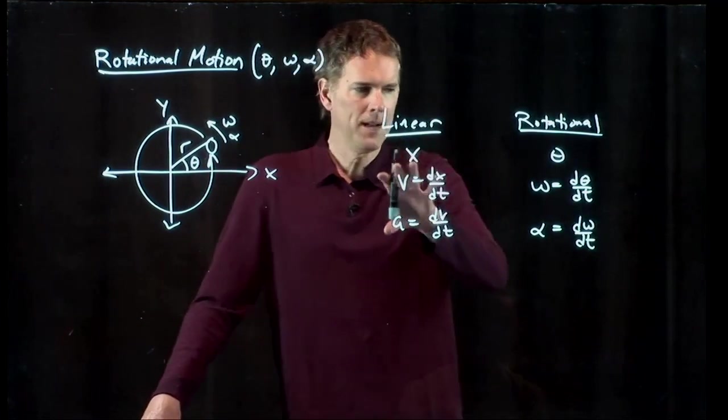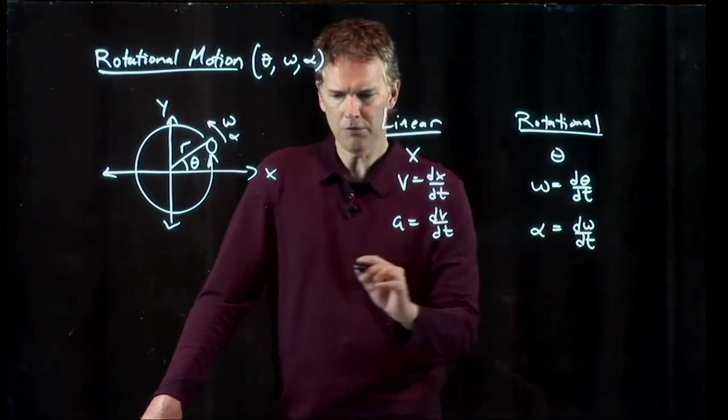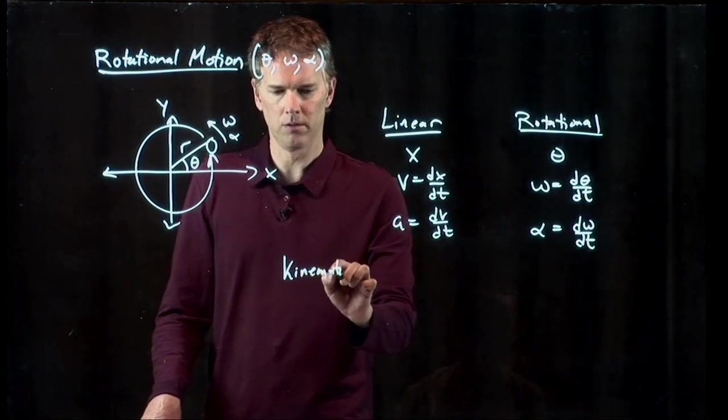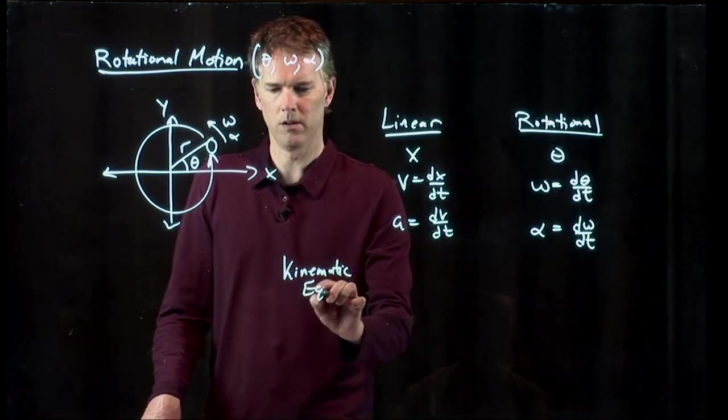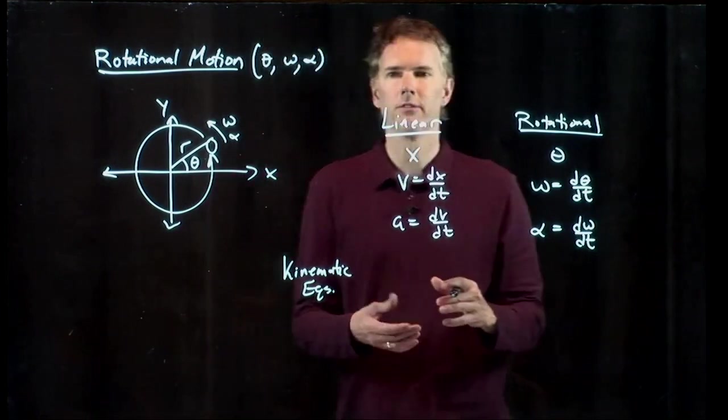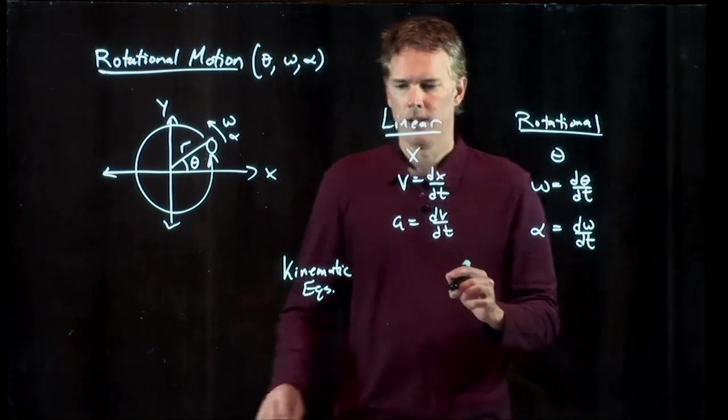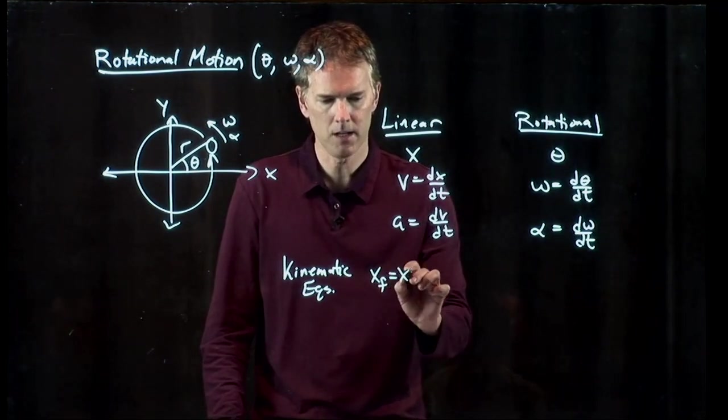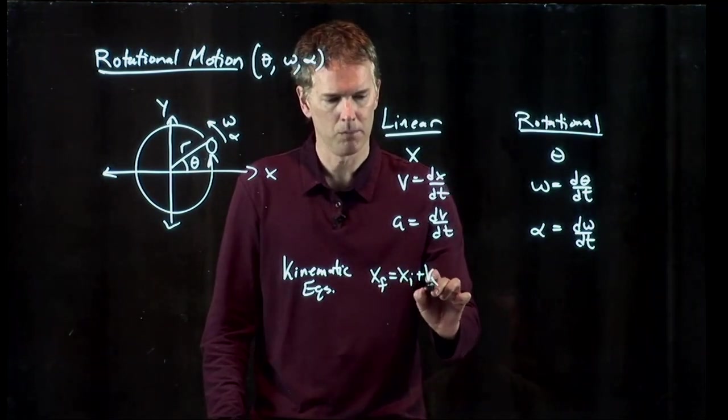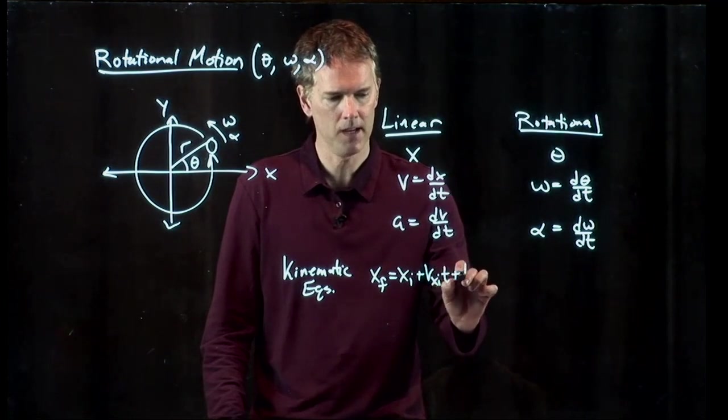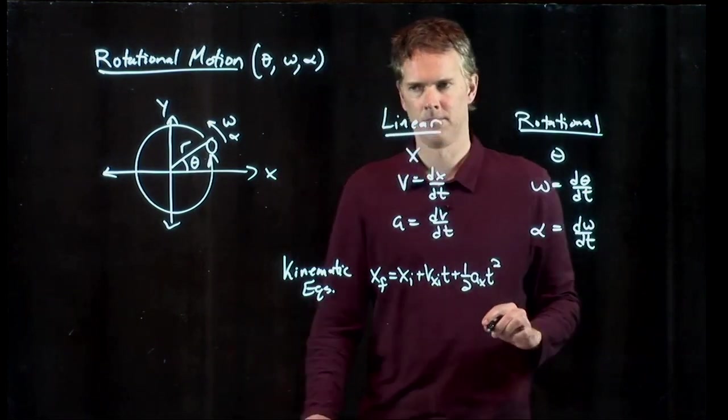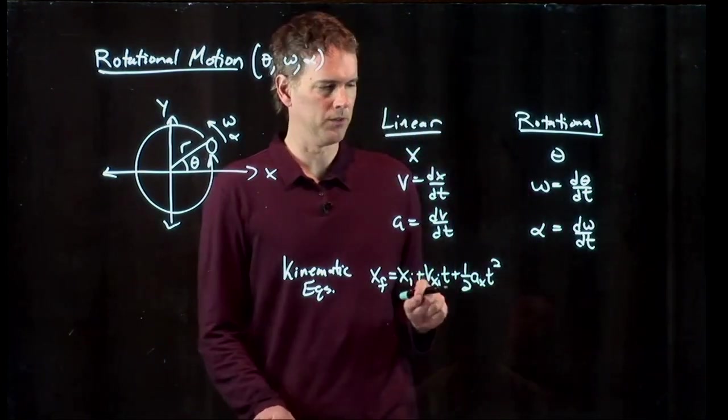Now if we're making these substitutions, we also realize that we have a whole set of equations, the kinematic equations, which govern motion. For instance, this one: x_final equals x_initial plus v_x_initial times t plus 1/2 a_x t squared. That's one of those equations.